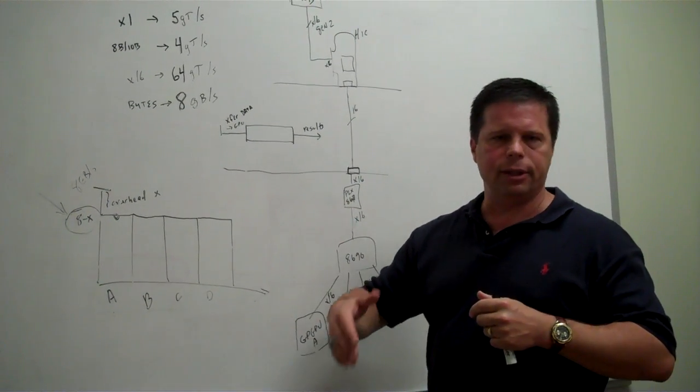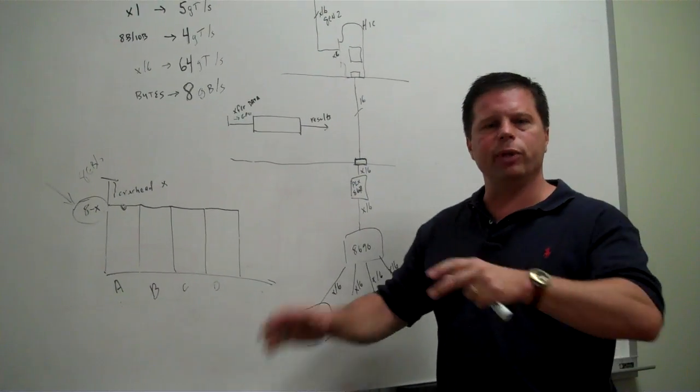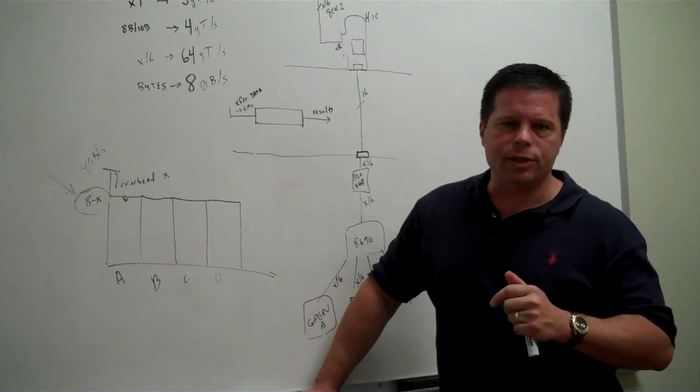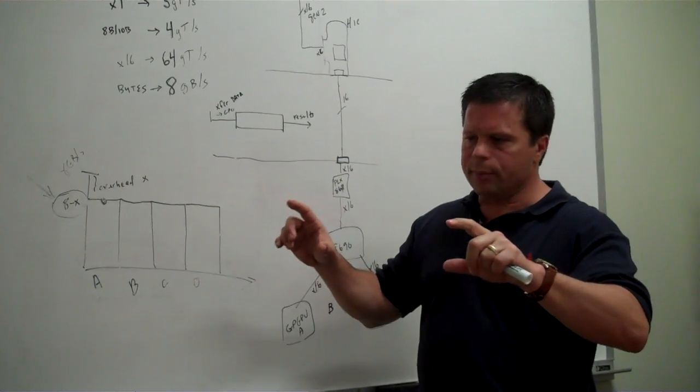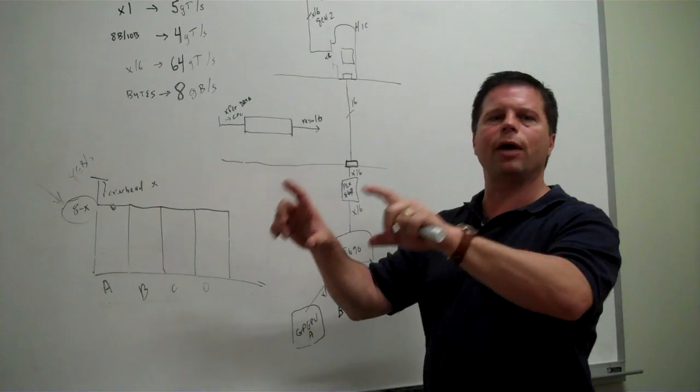Then, first order, they may take 4 into 64 and say, okay, I need to split my data set out across 16 GPGPUs. Whatever that ratio ends up being, they now have some first order number that says, here's how many GPGPUs I need to tackle this data set.